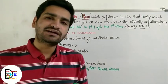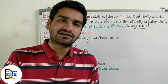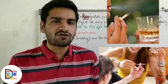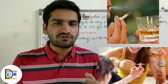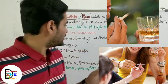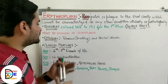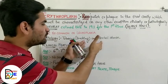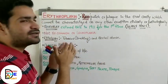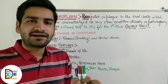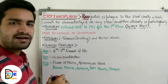Regarding the etiology of erythroplakia, it mainly occurs due to abuse of tobacco and alcohol. Tobacco mainly in the form of cigarettes and bidis, along with alcohol abuse, are considered the risk factors or etiological factors. There is no exact etiology established for this condition.